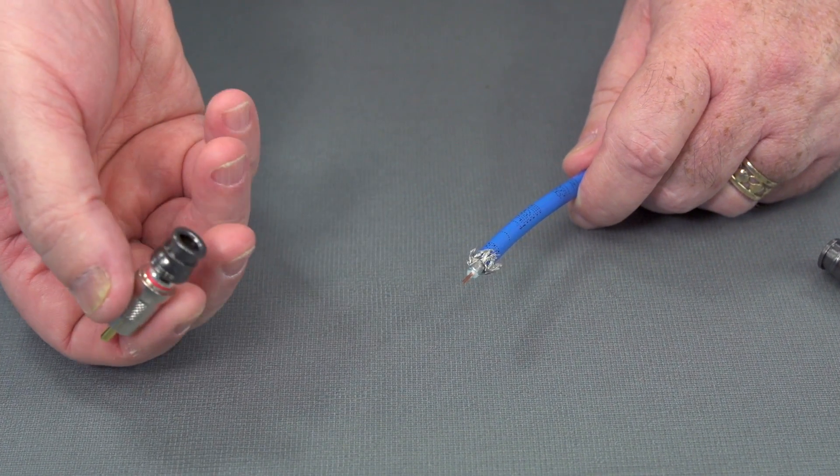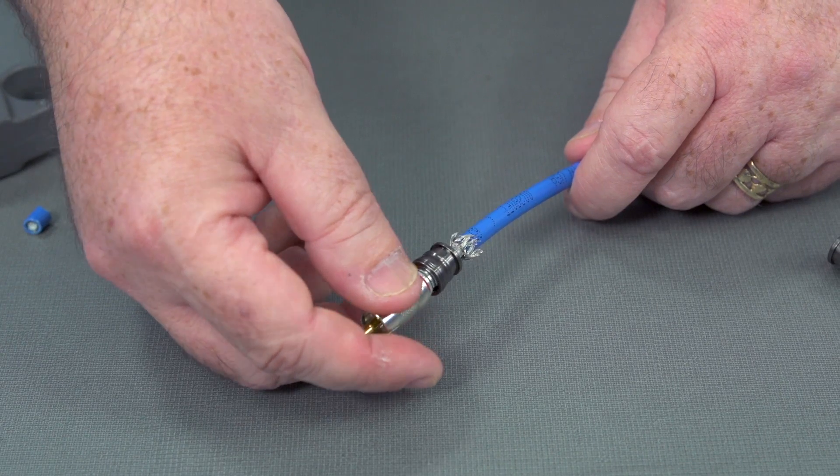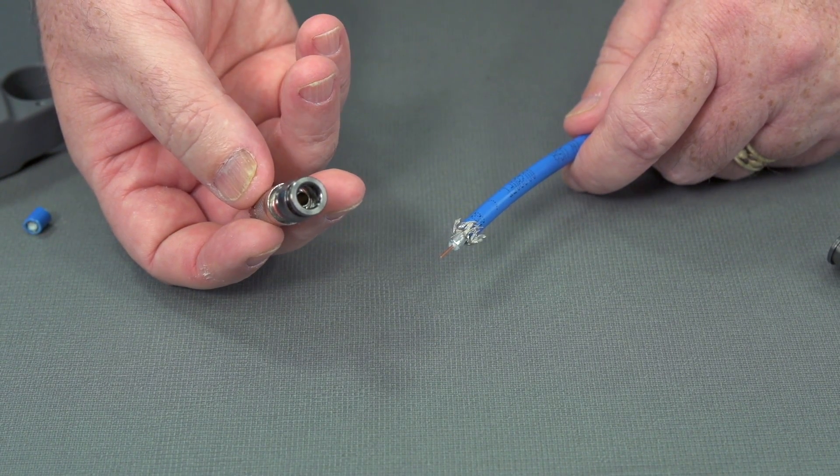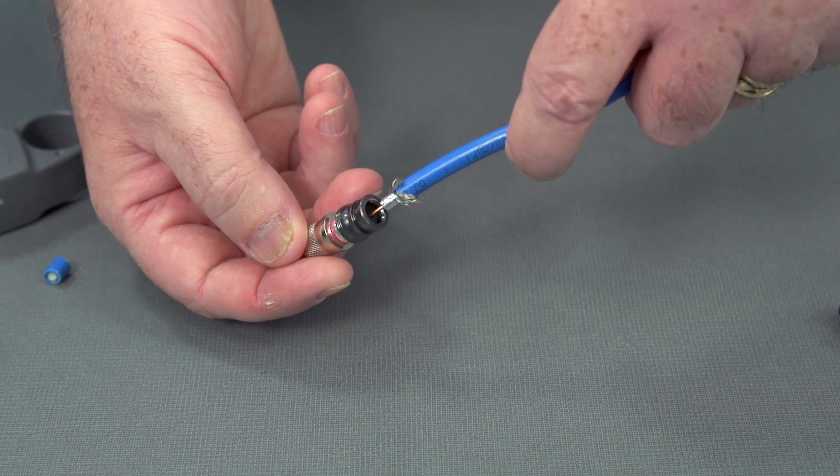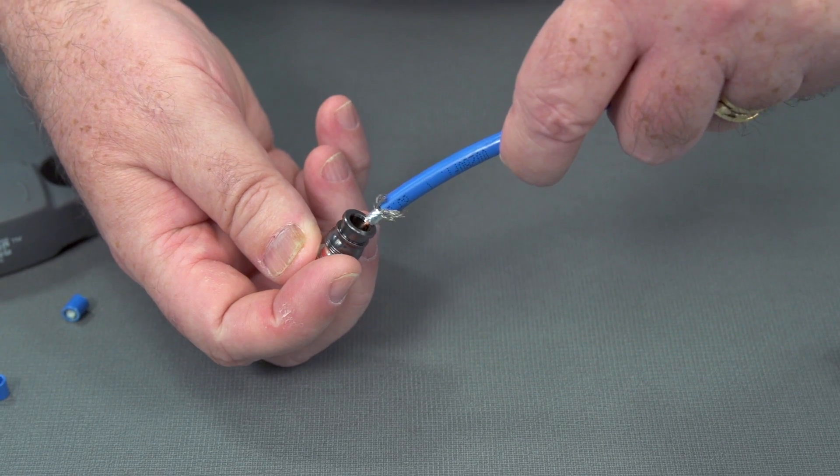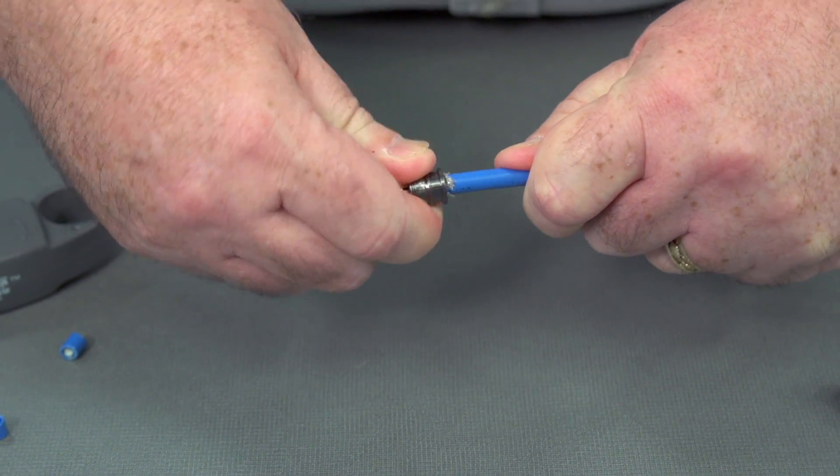And again, we'll fit the connector onto the wire. The center conductor and the dielectric need to fit inside this small hole in the middle. Let's fit it on.